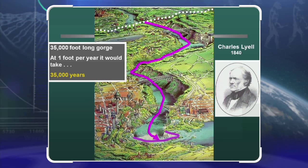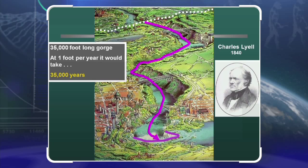At the time he visited in 1840, the gorge was 35,000 feet long. Lyell did not believe the Bible. He believed things occurred slowly and gradually over long periods of time, so he did some math. Instead of measuring what was actually going on, he speculated and said he believed the gorge had only been eroding at one foot per year. That would make the age of the falls 35,000 years old.